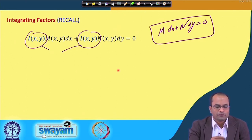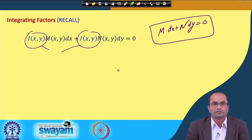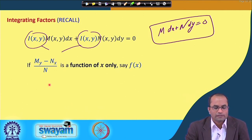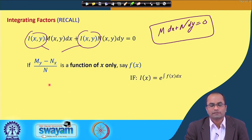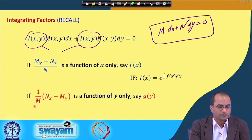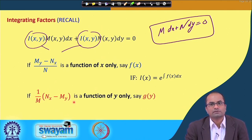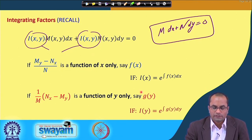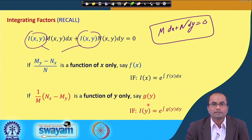We also saw how to evaluate the integrating factor in special cases. One case was that if (M_y - N_x)/N is a function of x only, say f(x), then the integrating factor is e^(∫f(x)dx). Also, if (1/N)(∂N/∂x - ∂M/∂y) is a function of y only, call it g(y), then the integrating factor is I(y) = e^(∫g(y)dy).